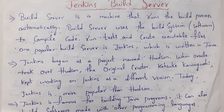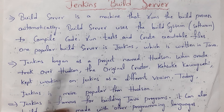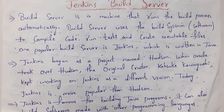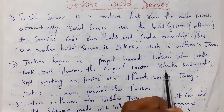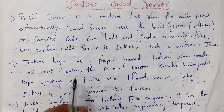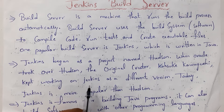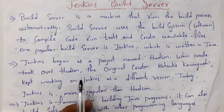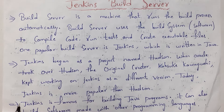In the old days before Jenkins, companies used a server called Hudson. Oracle company took Hudson, and a creator named Kohsuke Kawaguchi modified it and gave it a new name: Jenkins. So Jenkins is an updated version of Hudson server, and today Jenkins is more popular than Hudson.